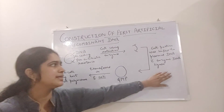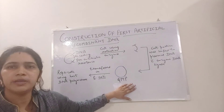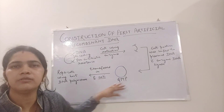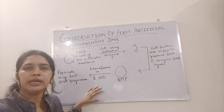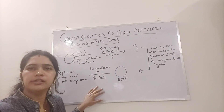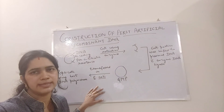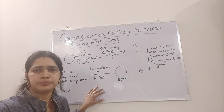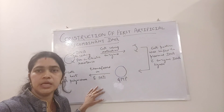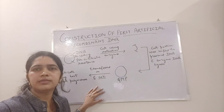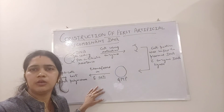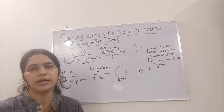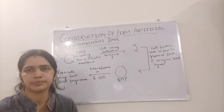This plasmid becomes a genetically modified plasmid, which is then transferred into E. coli where it gets replicated using the host DNA polymerase enzyme. This ability to form multiple copies of the antibiotic resistance gene in E. coli is also called the cloning ability of the antibiotic resistance gene in E. coli.